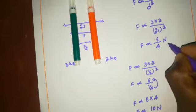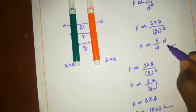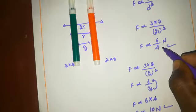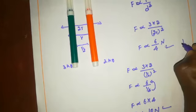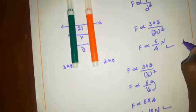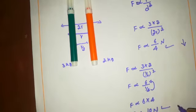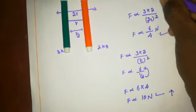Observe: when the distance increases between the two objects, the force decreases. When the distance decreases between the two objects, the force increases. This is why the force is inversely proportional to the square of the distance.